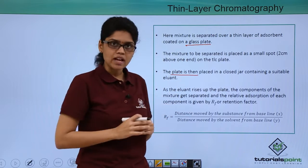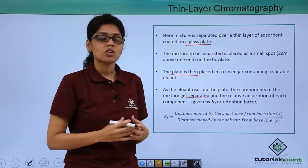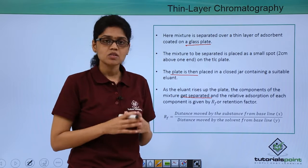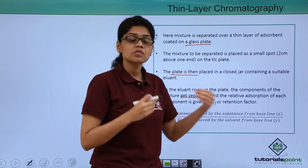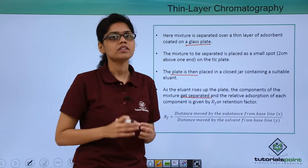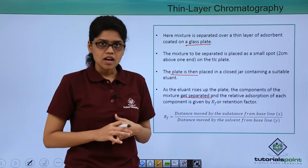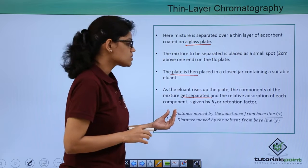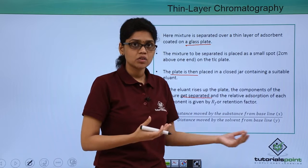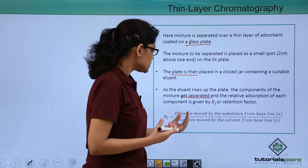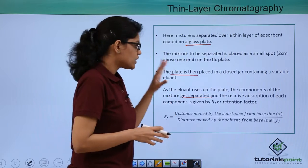The solvent rises up due to capillary action and separation of compounds takes place based on retention. Based on affinity and retention, we can calculate the relative adsorption of each compound using an important parameter called the retention factor, or RF factor. The RF factor is the distance moved by the substance from the baseline (denoted as x) divided by the distance moved by the solvent from the baseline (denoted as y).